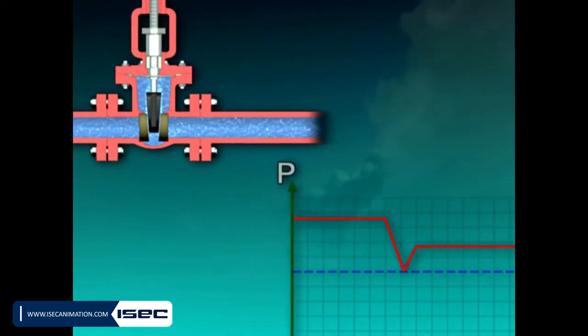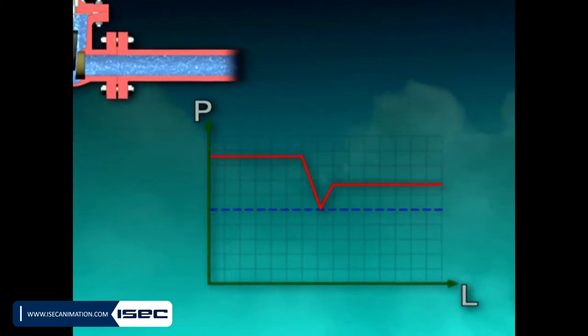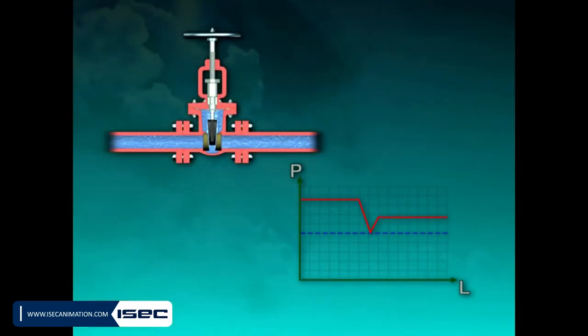The more the valve is taken away from the open position and becomes nearer to the closed position, the difference between the inlet and outlet pressures of the valve increases.